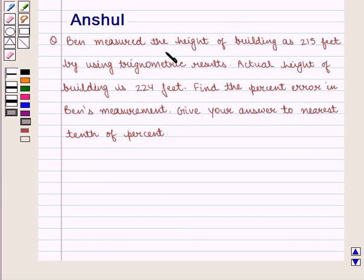Ben measured the height of a building as 215 feet by using trigonometric results. The actual height of the building is 224 feet. Find the percent error in Ben's measurement. Give your answer to the nearest tenth of a percent.